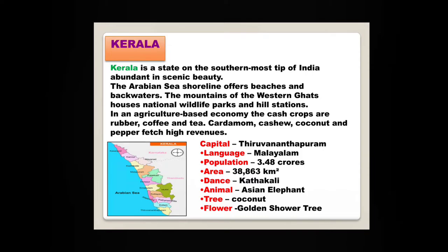Kerala is one of the most beautiful states in southern India. It is a state on the southernmost tip of India, abundant in scenic beauty. The Arabian Sea shoreline offers beaches and backwaters. The mountains of the Western Ghats house national wildlife parks and hill stations. In an agriculture-based economy, the cash crops are rubber, coffee and tea. Cardamom, cashew, coconut and pepper fetch high revenues. The capital is Thiruvananthapuram and the animal most commonly found here is the Asian elephant.